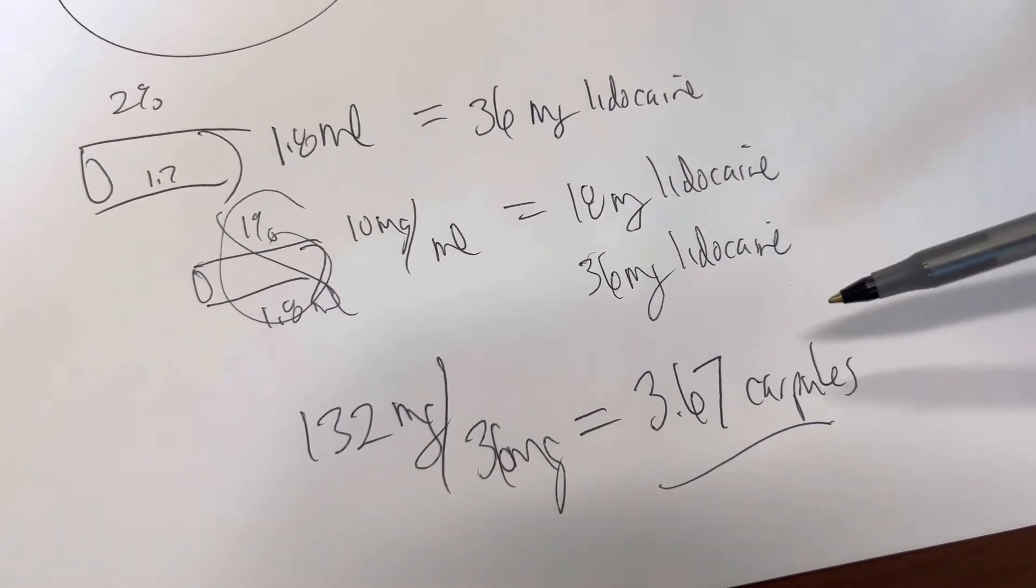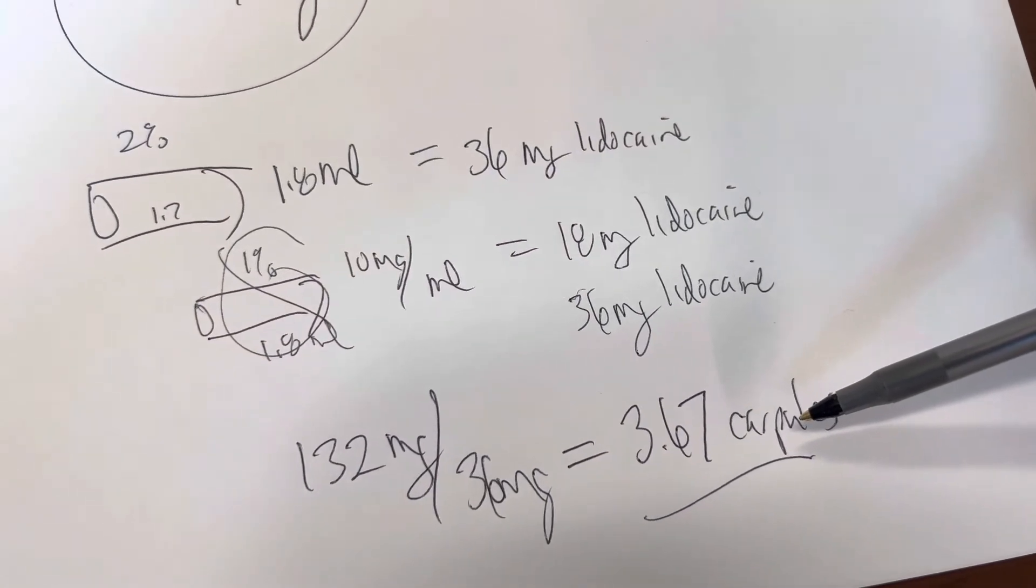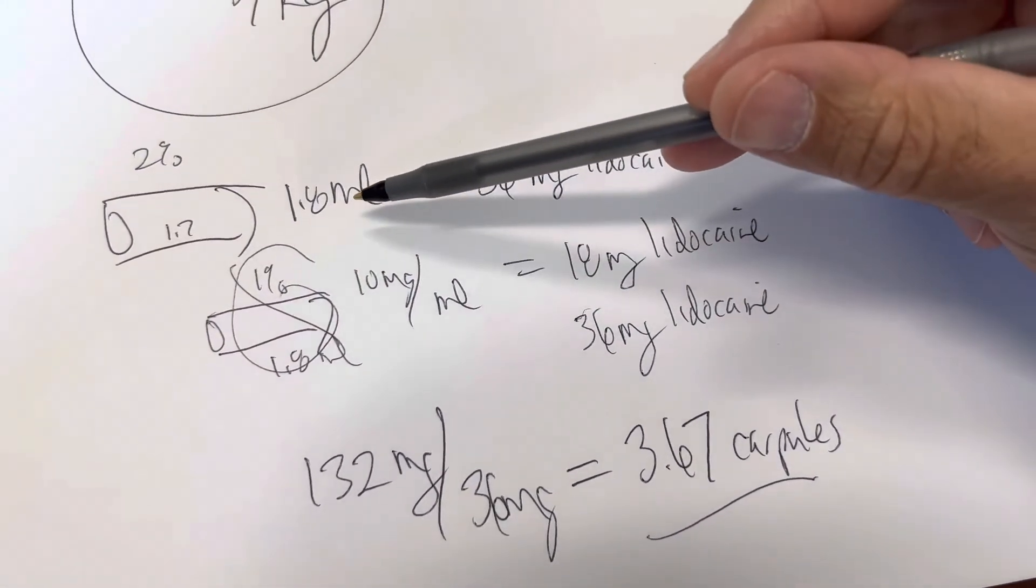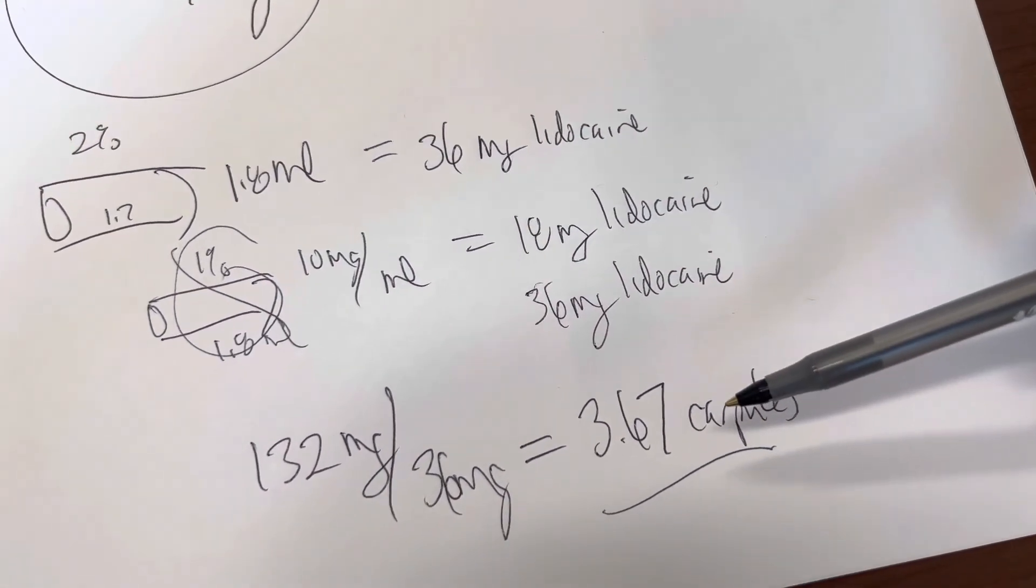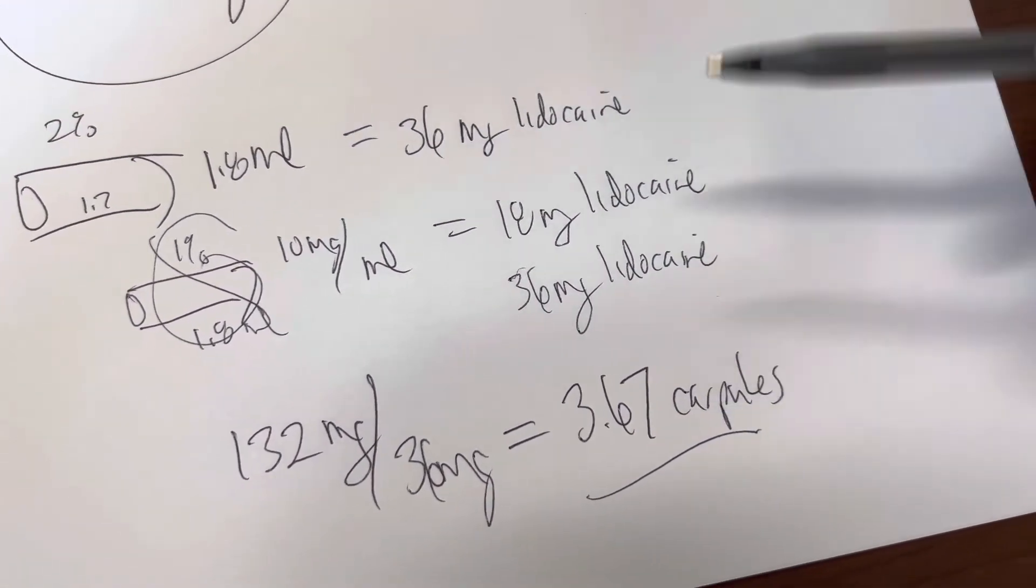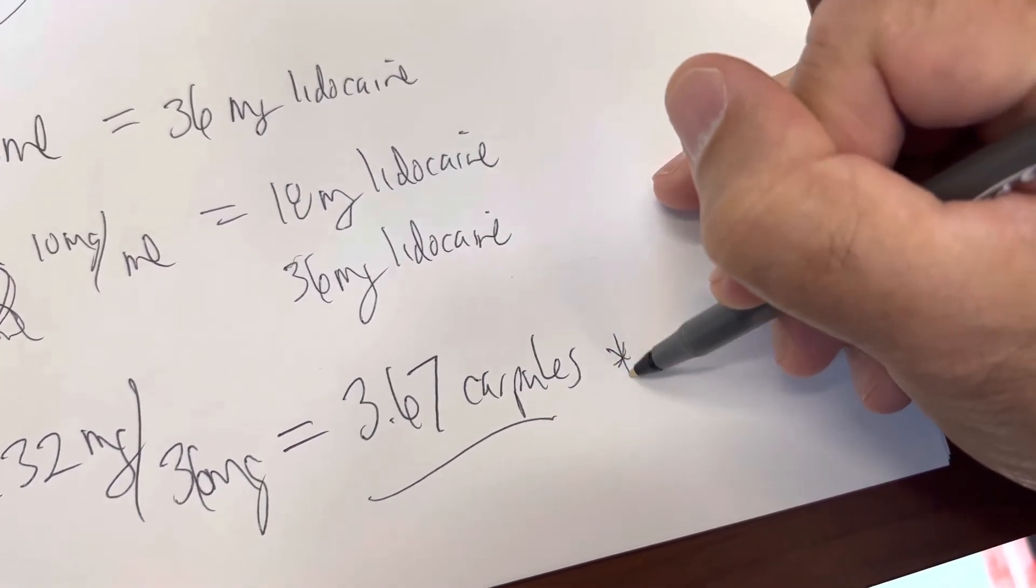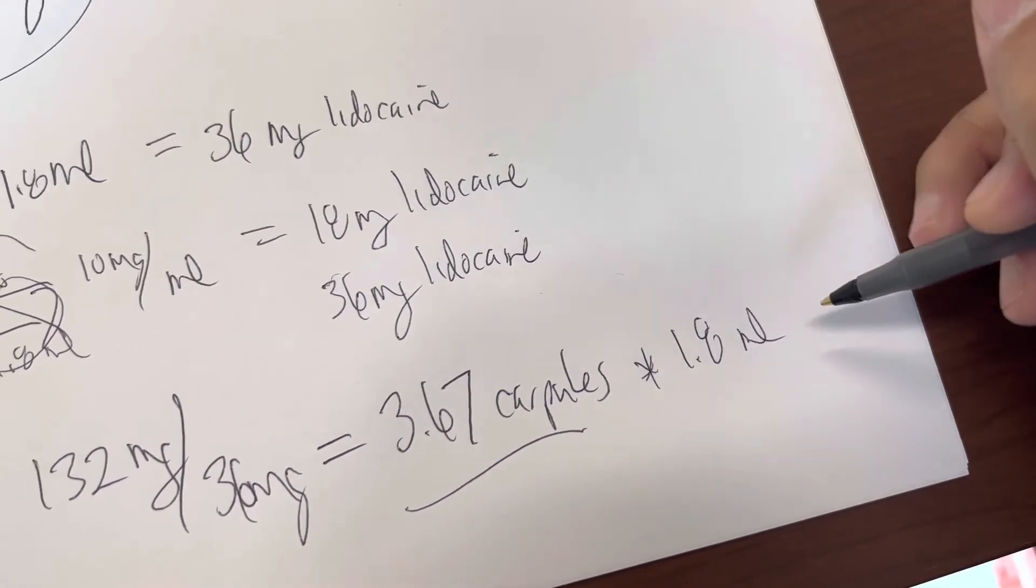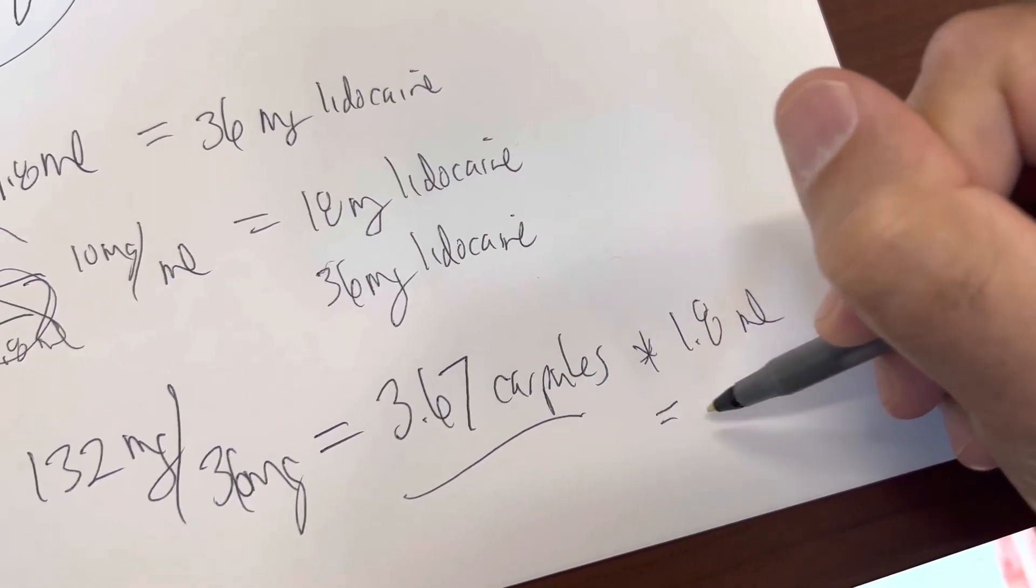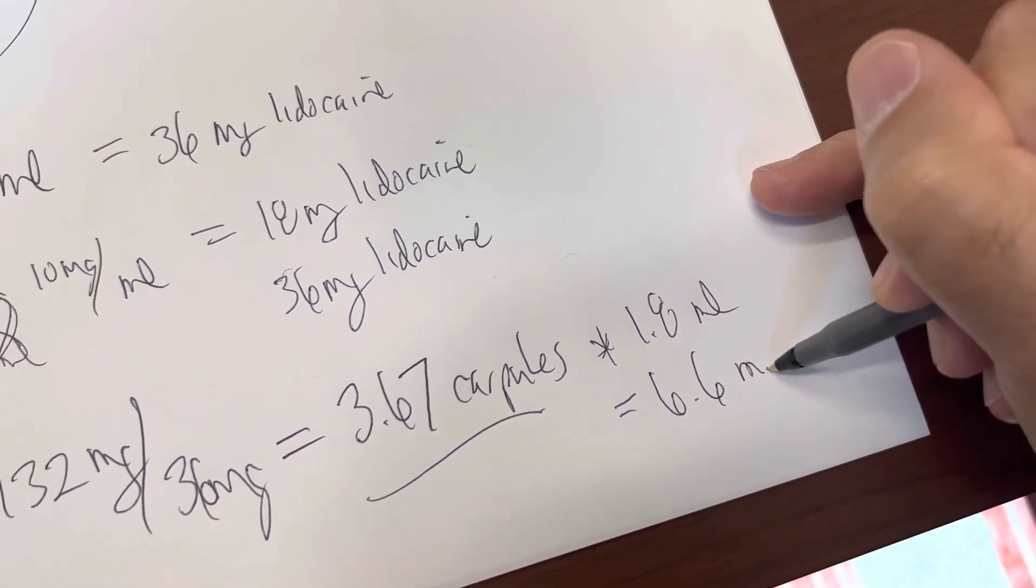Well, we just now said that we were going to use 3.67 carpules. But if there's 1.8 milliliters per carpule, then what we're going to do is have to multiply the 3.67 times 1.8. And that's going to give us an answer of 6.6 milliliters.